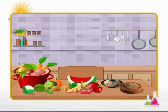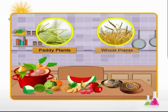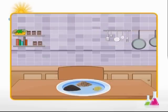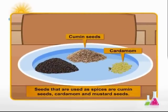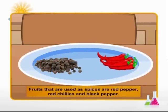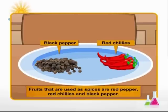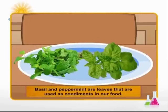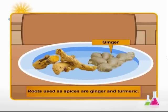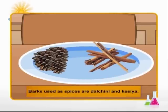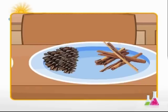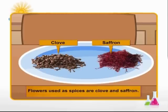The ingredients used to prepare food come from different sources. For example, fruits and vegetables are obtained from plants. Rice and wheat are obtained from paddy and wheat plants grown in fields. Spices add to the taste of our food. Spices are plant products obtained from different parts of a plant. Seeds used as spices include cumin seeds, cardamom, and mustard seeds. Fruits used as spices include red pepper, red chilies, and black pepper. Leaves such as basil and peppermint are used as condiments. Roots used as spices are ginger and turmeric. Barks of some trees are used as spices — examples are dalchini and kesiya. Spices such as clove and saffron are obtained from the flowers of plants.